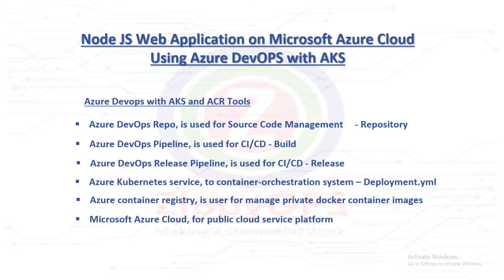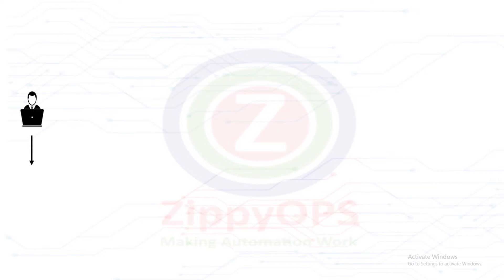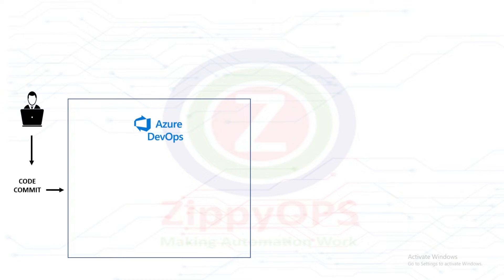Let's explore the workflow of NodeJS application deployment stage by stage. In the first stage, the Azure Pipeline pulls the NodeJS application code from Azure DevOps Repo, builds it, and stores the build package as an artifact.